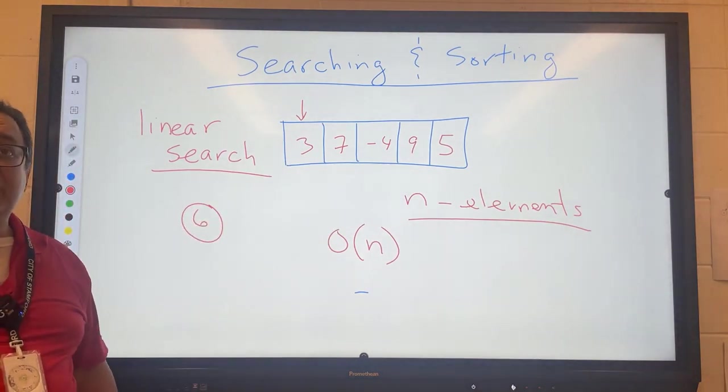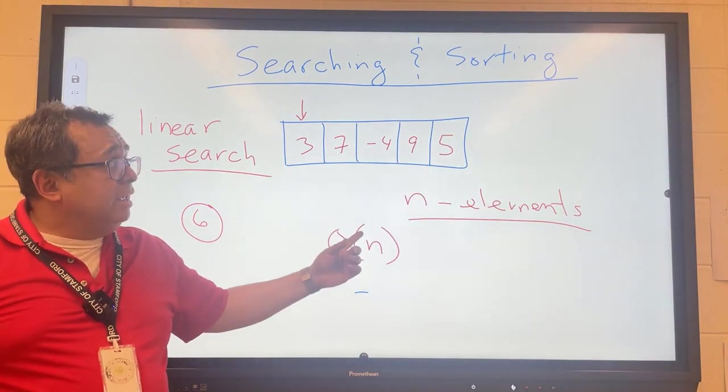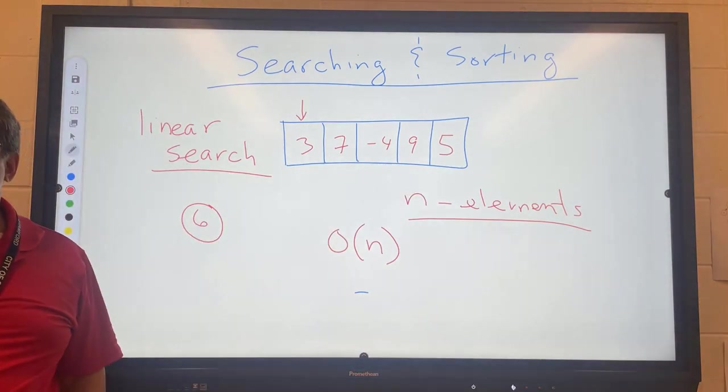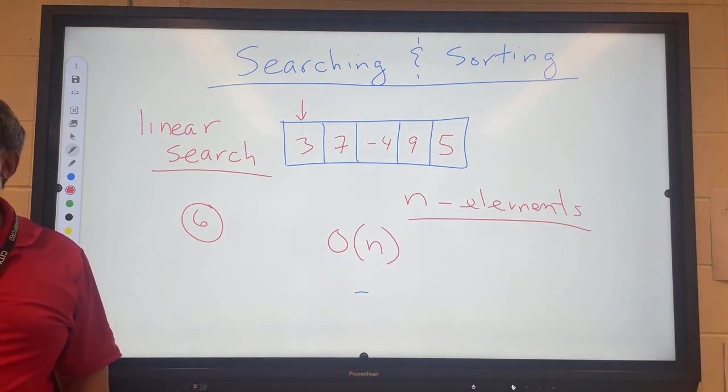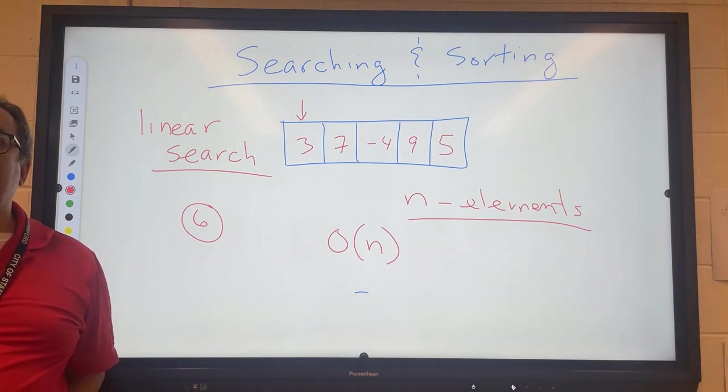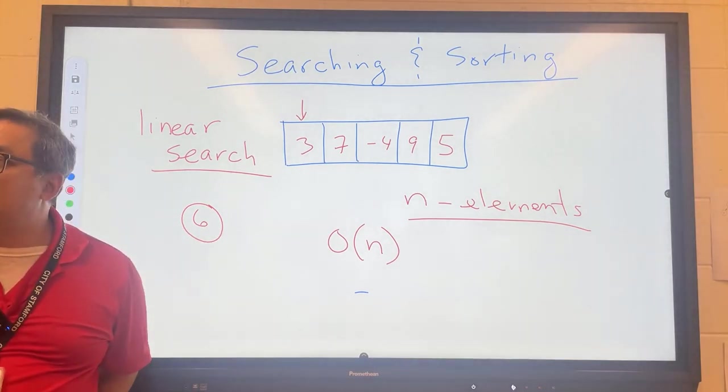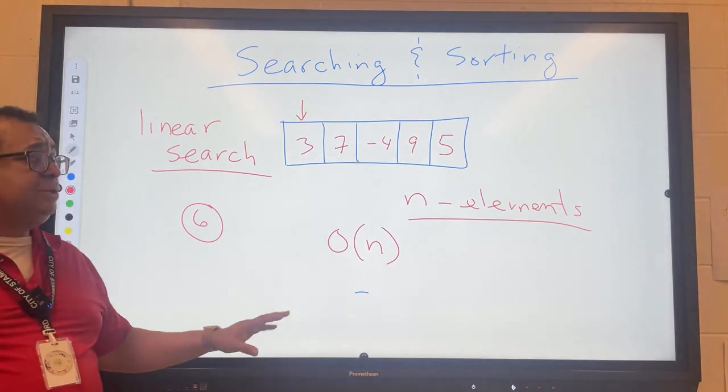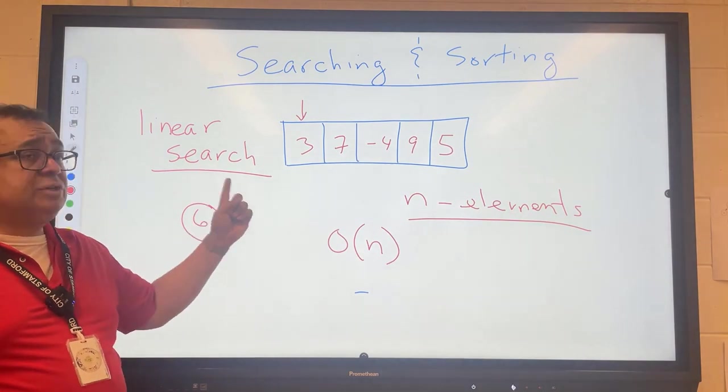If n is the number of elements, it would take us on the order of n comparisons to find the item or to conclude it isn't there. If it isn't there, it will always take n comparisons. If it is there, what will be the average number of comparisons? N over two. We're going to be more concerned with the worst case scenario, so the linear search is going to be on the order of n comparisons.